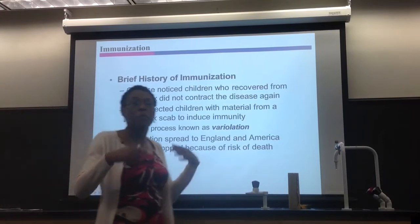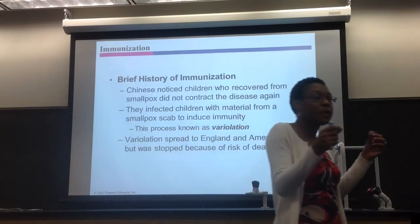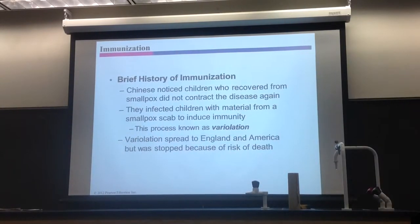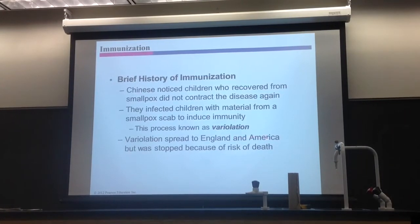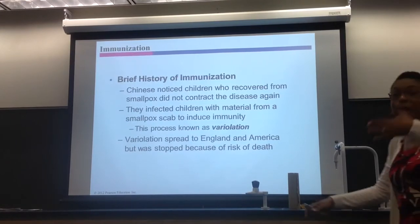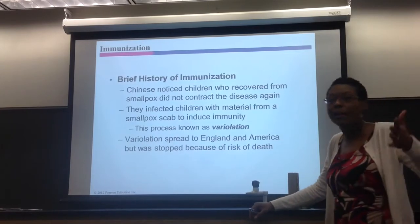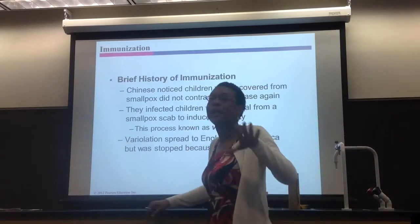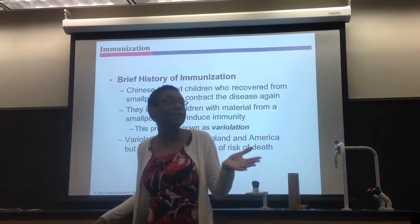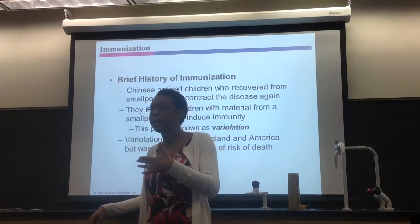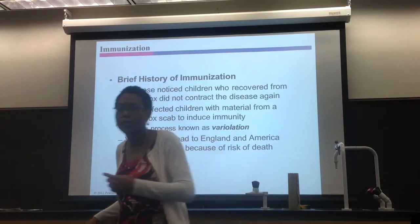Variolation is where you purposely infect someone with a pathogen like smallpox for the sake of developing immunity. But that's bad because you might end up dying. Some children actually died from it. The English and Americans in the 1700s tried it but outlawed it in England and in the colonies because people were dying — it was not ethical, so they stopped it.